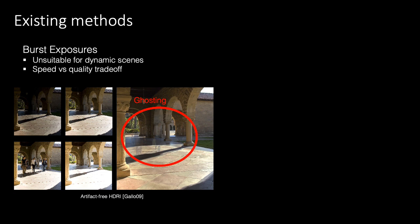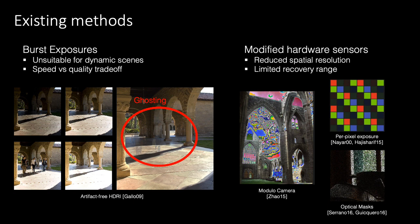Existing burst methods are unsuitable for dynamic scenes due to ghosting artifacts. These artifacts can be removed in post, but the capturing and post-processing time is prohibitive for real-time applications. Another approach is hardware sensor modification, but this reduces spatial resolution and does not recover scenes with large contrast.